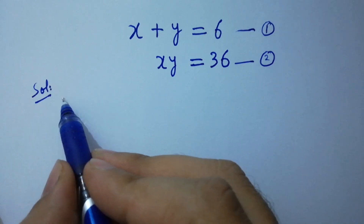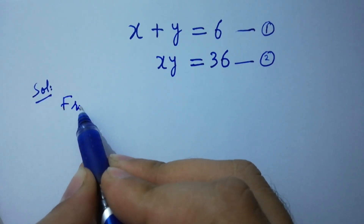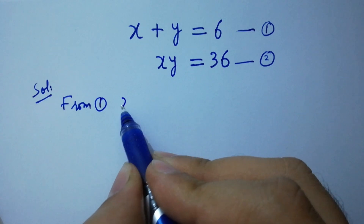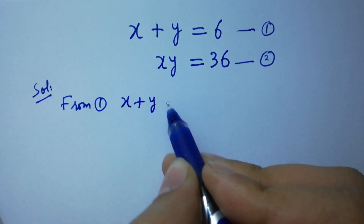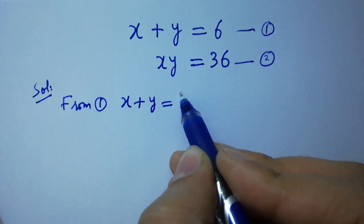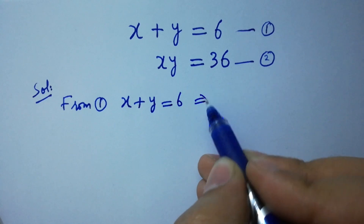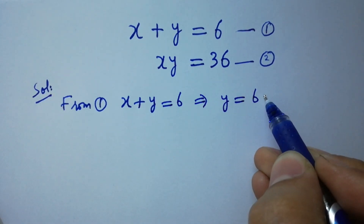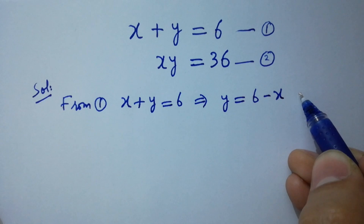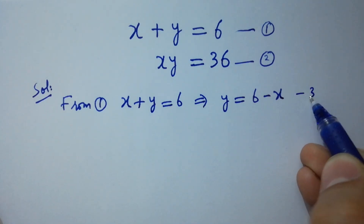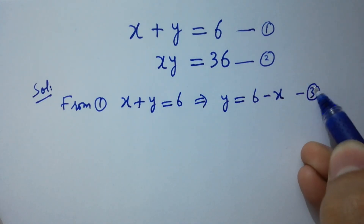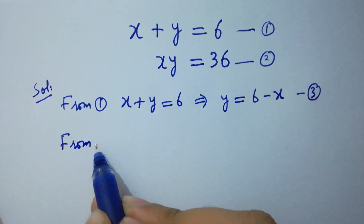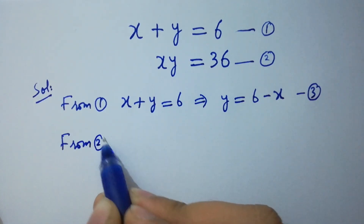From the first equation, x plus y equals 6, then y equals 6 minus x. Take this as the third equation.